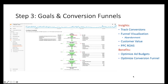Step three is goals and conversion funnels. We can track conversions — for example, in the Google Merchandise Store, an e-commerce website, we can visualize the shopping cart conversion funnel and study cart abandonment, which is typically a key issue for e-commerce companies. We can figure out which page customers drop out from the most. The highest drop-off is on the billing and shipping page, so we want to improve that design to make it easier for users to proceed to payment.